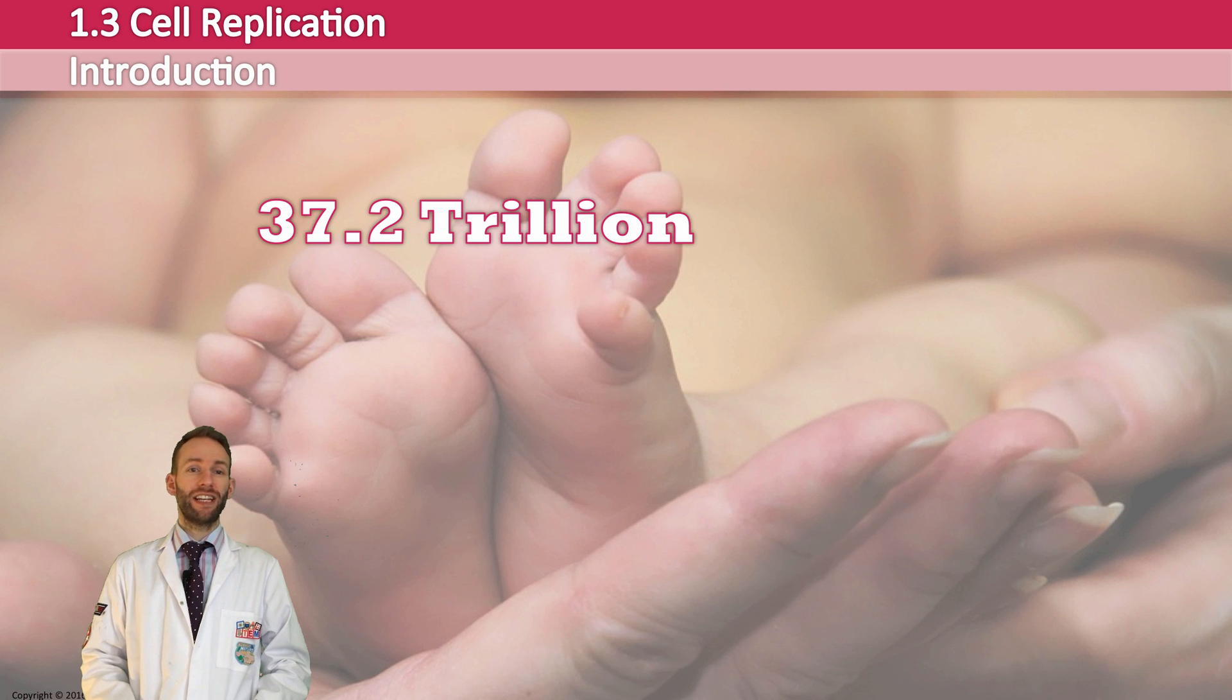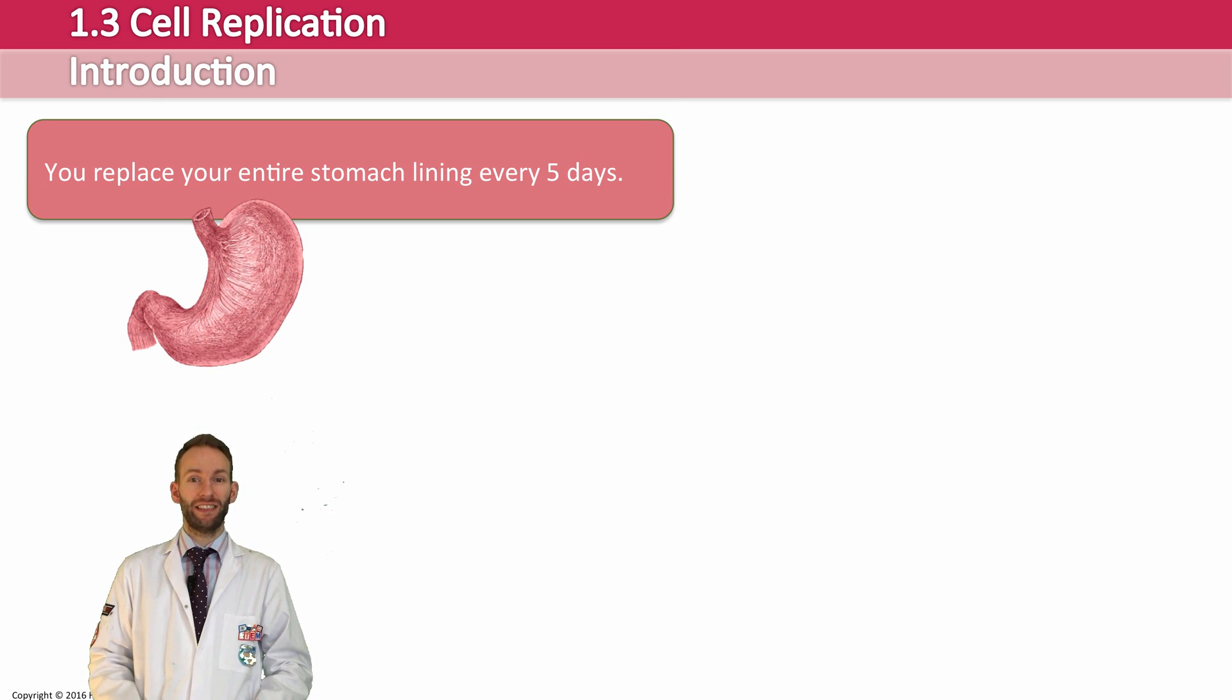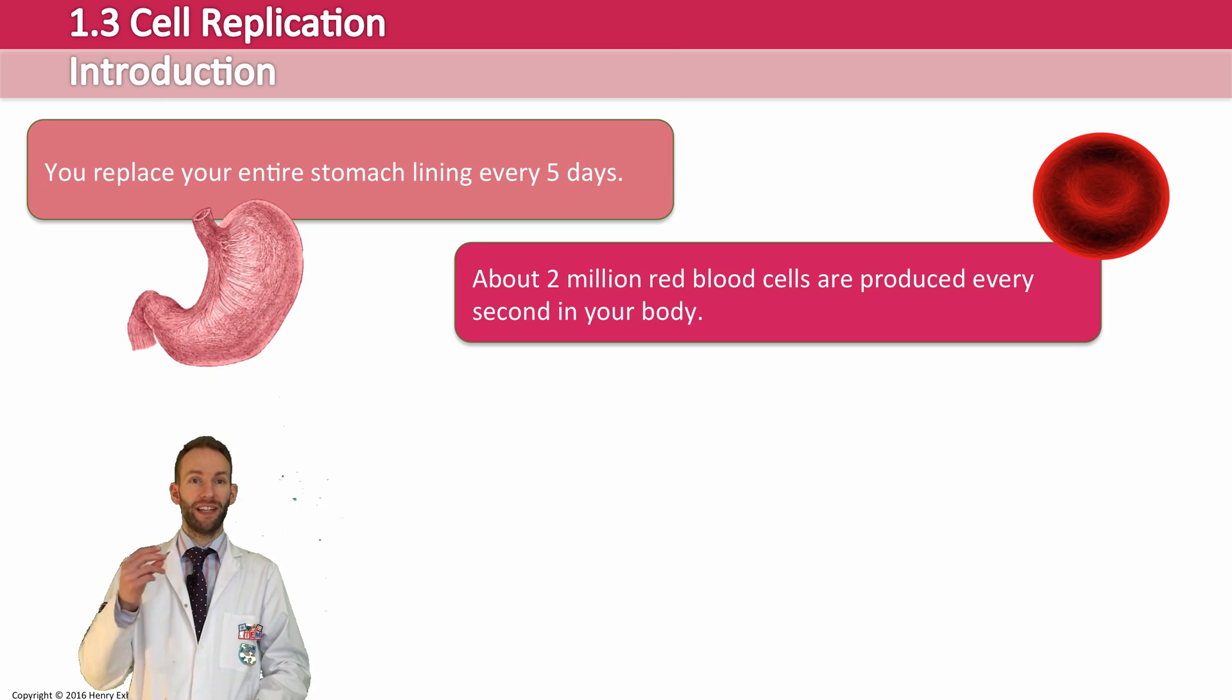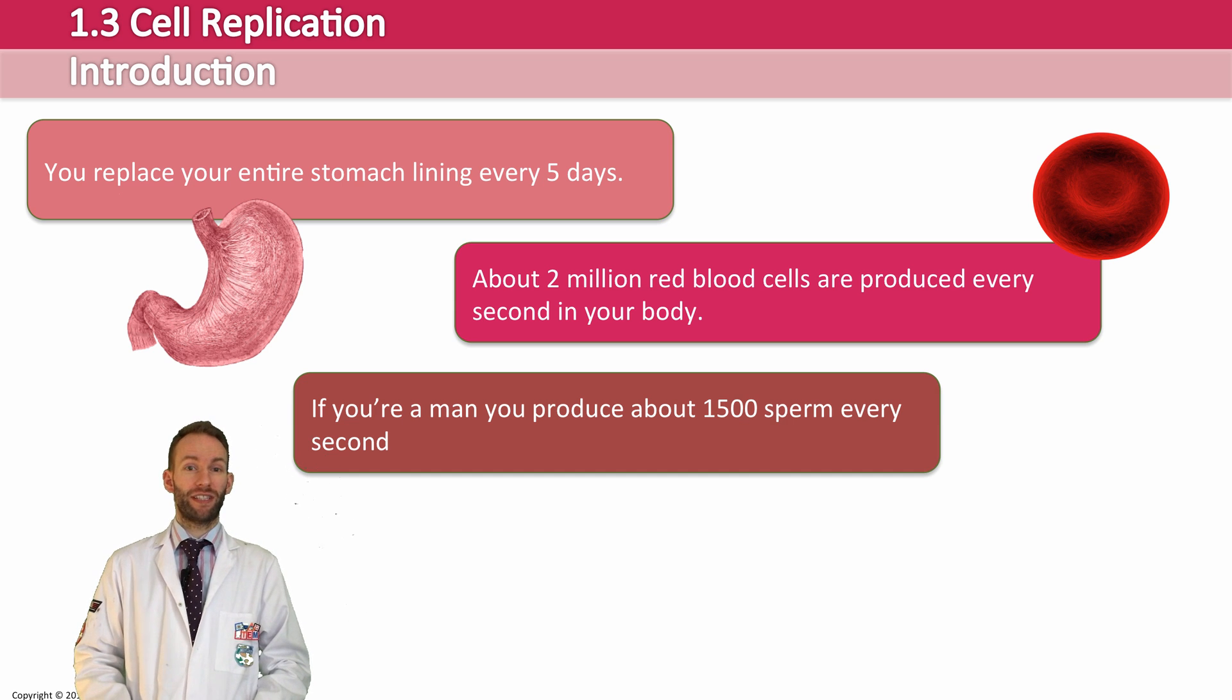And like I said, it's not all about this growth of cells, it's the fact that even when you've finished growing, you've got to replace all these other cells. You replace your entire stomach lining every five days. About two million red blood cells are produced every second in your body. Two million every second. And if you're a man, you produce about 1,500 sperm every second. So, cell replication, really, really important to understand.